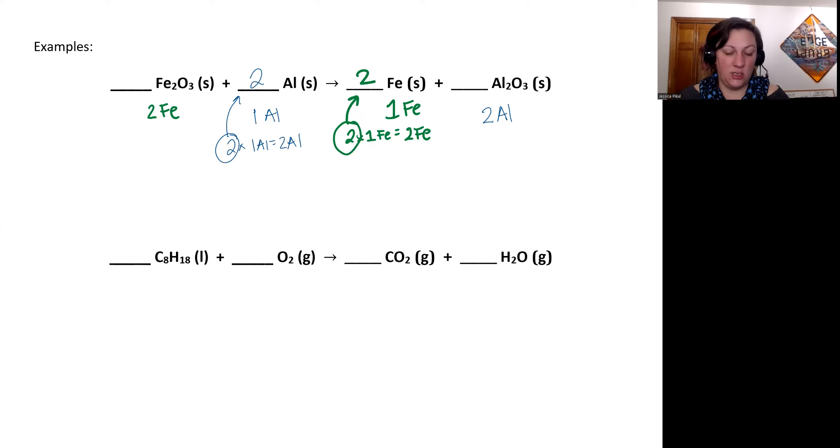All right, so now my aluminum and my iron are both balanced. I'm going to focus on my oxygen. So looking at my reactant side, I have three oxygen. Looking at my product side, I have three oxygen. So they're already balanced. And that sometimes happens and it's really nice when you're like, oh cool, it's already done for me.